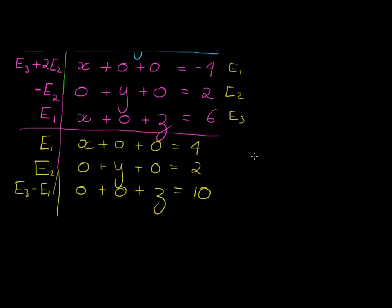and 6 minus 4 will be plus 4. That leaves me with 10. So there I have my values. I have that x, y, and z is equal to the numbers 4, sorry, that's negative 4, 4, 2, and 10.